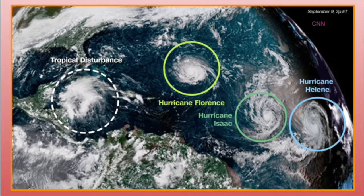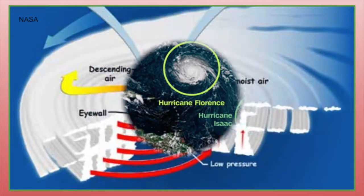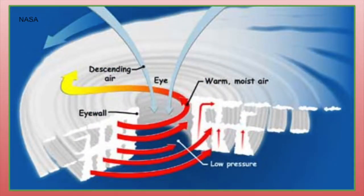The start of these big storms occurs when warm air and water evaporating from the ocean surface rise and form an area of low air pressure. The ocean surface temperature is at least 80 degrees Fahrenheit.